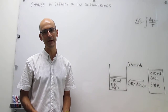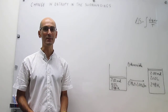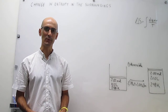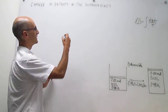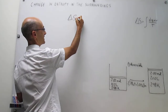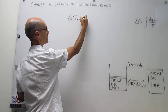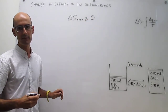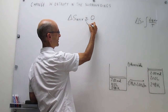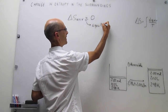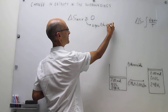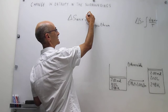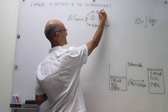In this video, we're going to describe how to calculate the change in entropy in the surroundings. We're concerning ourselves with the second law, which states that the change in entropy in the universe increases for a spontaneous process, or is equal to zero if the process is at equilibrium. If the change in entropy in the universe is positive, the process is spontaneous — you don't have to do anything for it to happen.